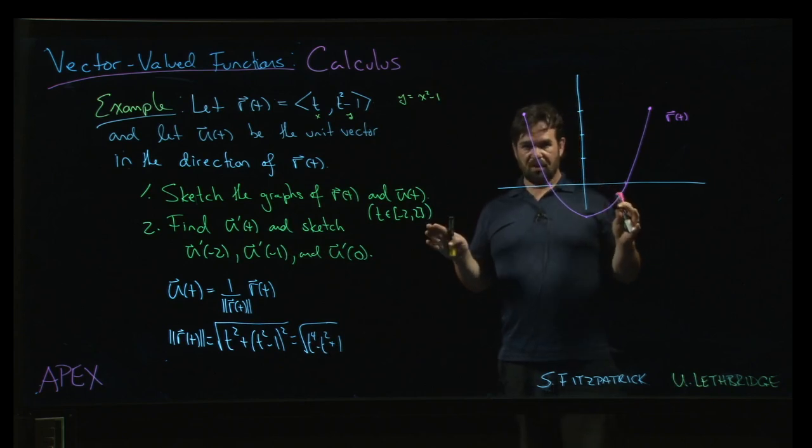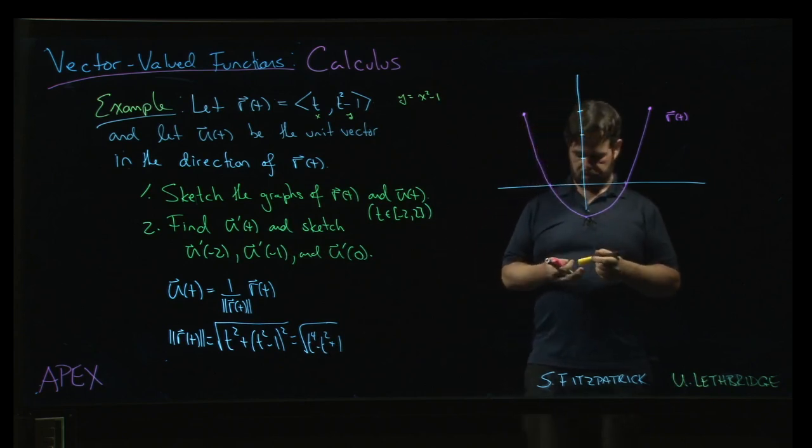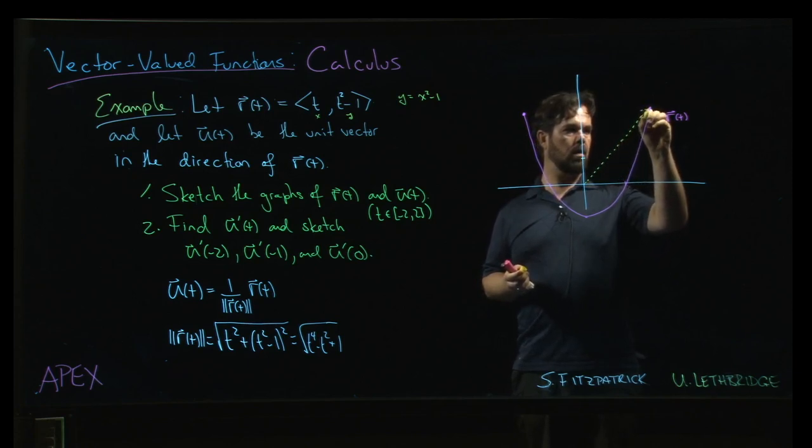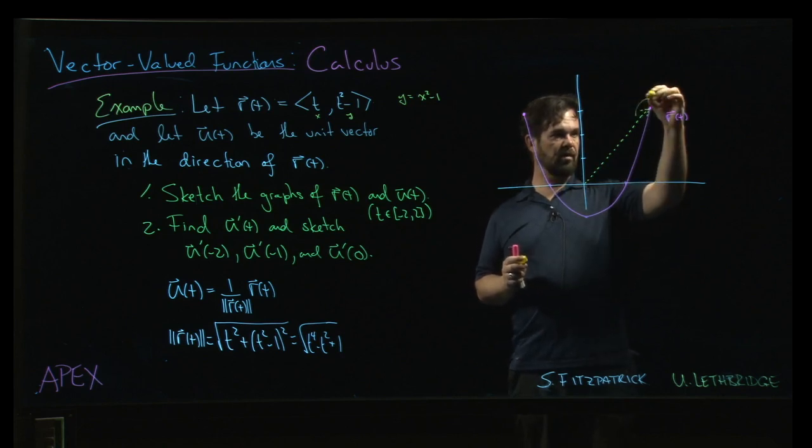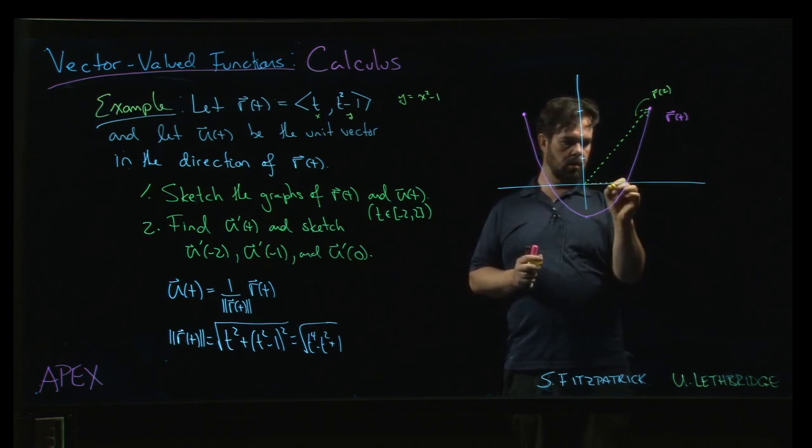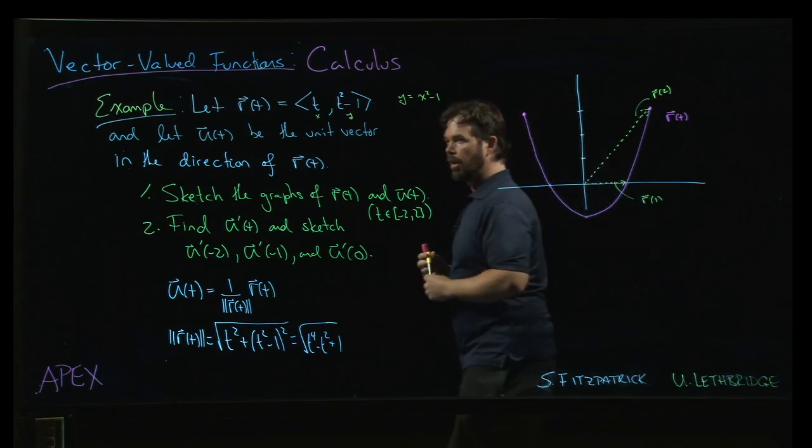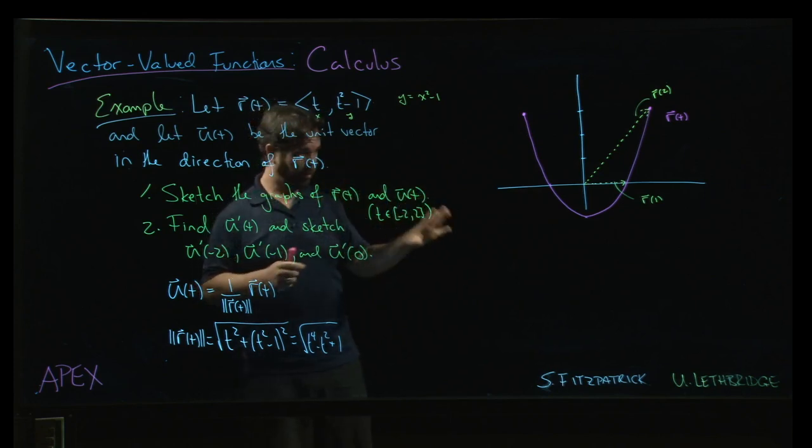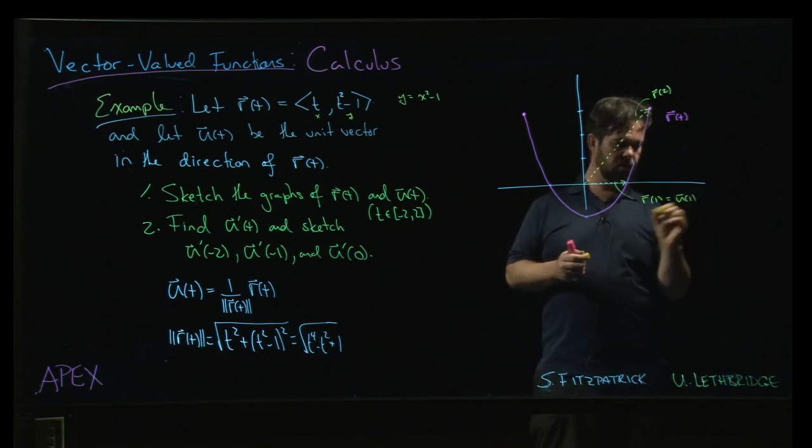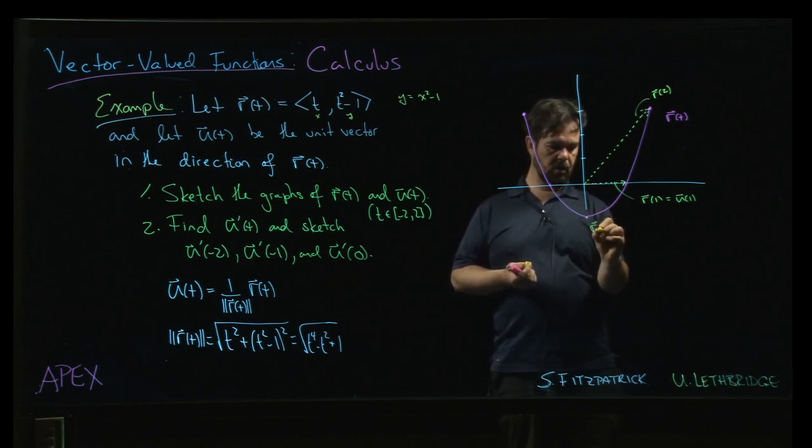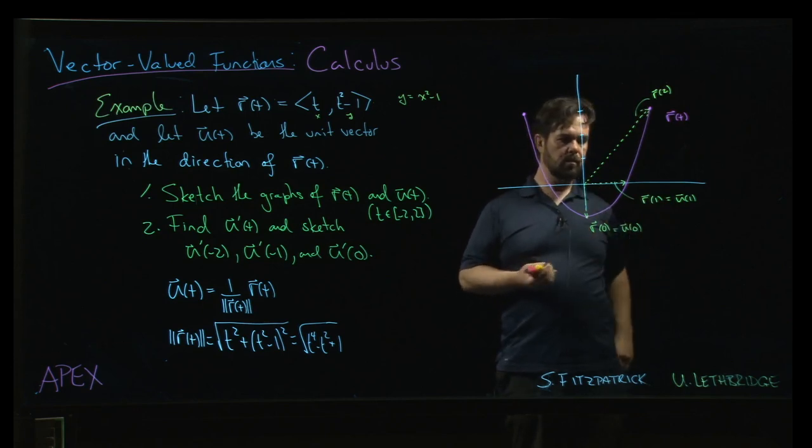Now what's that unit vector going to look like? If we think about r of t, remember that the graph is a set of all endpoints for these vectors, right? So this is r of 2, and this is r of 1. Now when t equals 1, we have 1, 0. We have something that already is a unit vector. So this r of 1 is actually equal to u of 1. And similarly we have the same thing for minus 1. And down here is r of 0, which would be equal to u of 0.